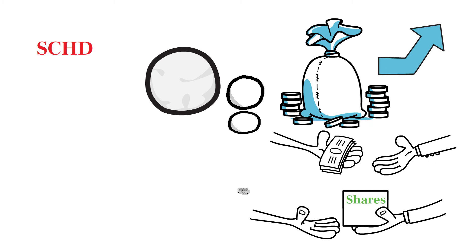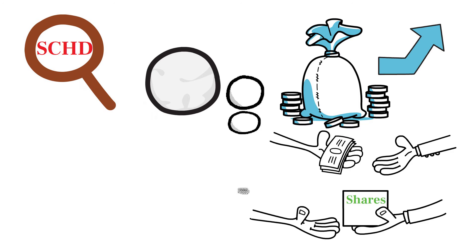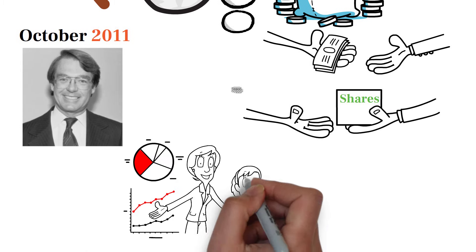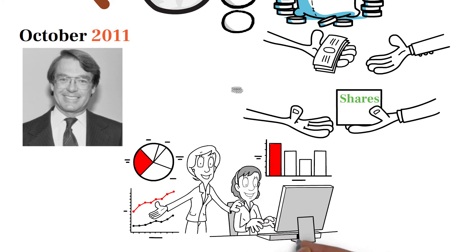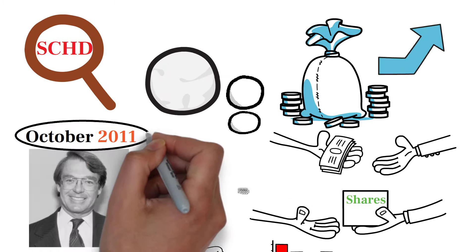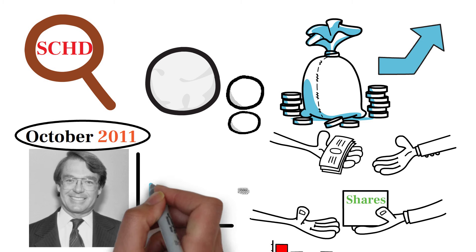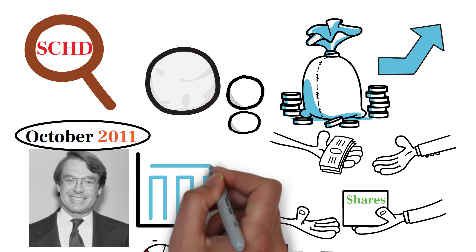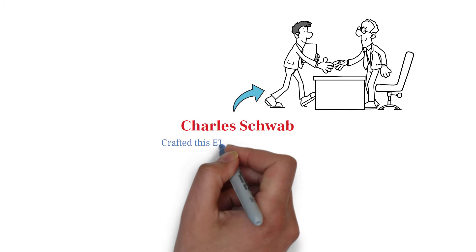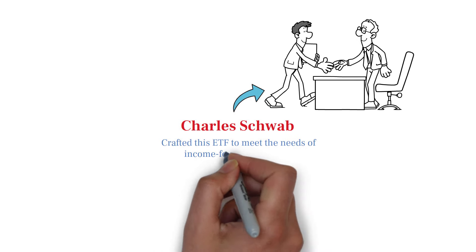To truly appreciate the power of SCHD, let's take a closer look at its concept and history. Launched in October 2011 by Charles Schwab, SCHD was designed to offer investors a straightforward, low-cost way to gain exposure to high-quality, dividend-paying companies. Since its inception in 2011, SCHD has been a go-to choice for those seeking a blend of steady dividend income and potential for capital appreciation. Charles Schwab, a name synonymous with trust and reliability in the financial world, crafted this ETF to meet the needs of income-focused investors.